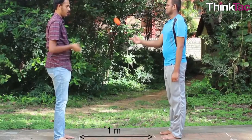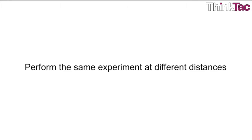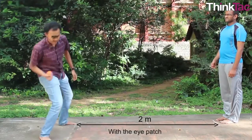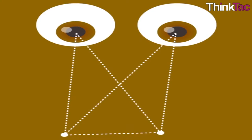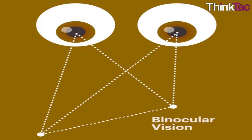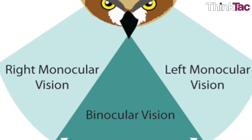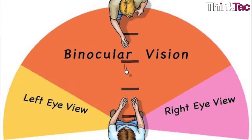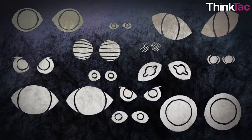You may have also tried the experiment described in our variations, where you try throwing a ball from different distances and see if you can catch it with and without an eye patch. Binocular vision is when the brain processes information received from two eyes to construct a single visual image. Binocular vision is beneficial over monocular vision because it helps in depth perception. Many kinds of animals have binocular vision.